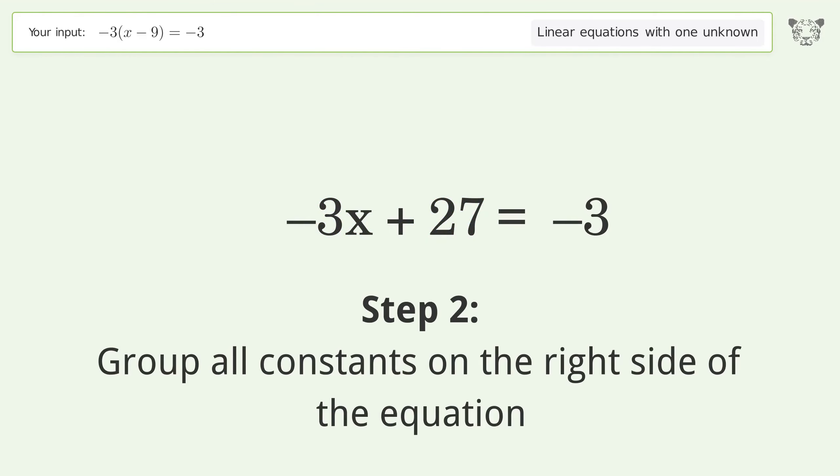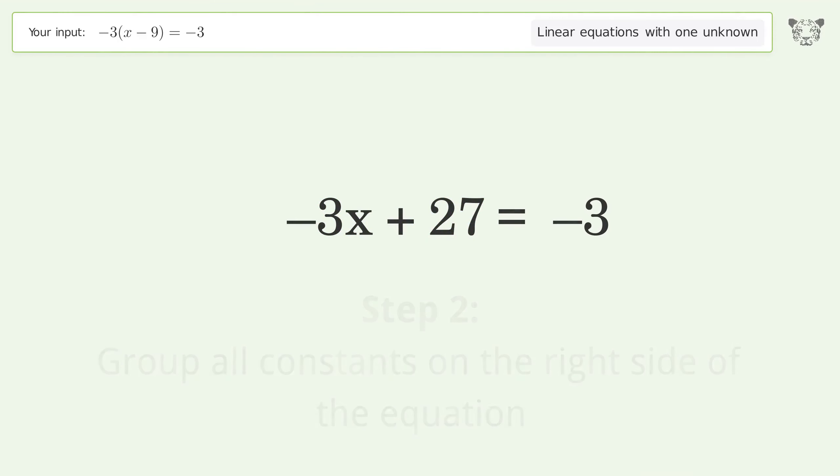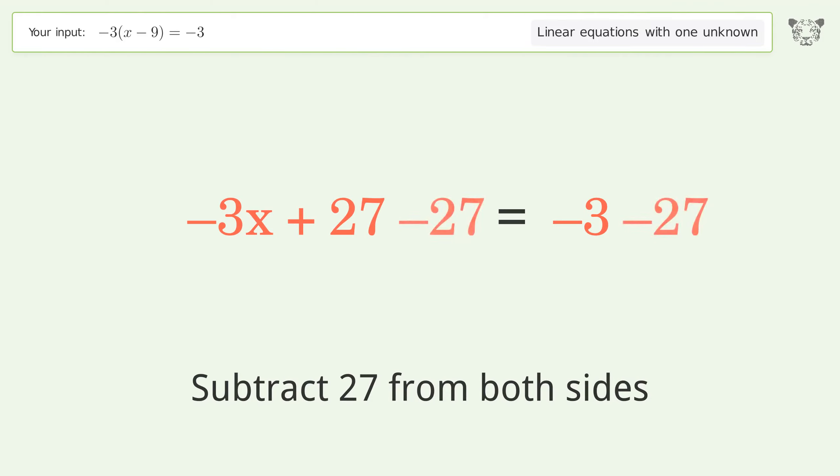Group all constants on the right side of the equation. Subtract 27 from both sides, then simplify the arithmetic.